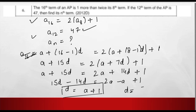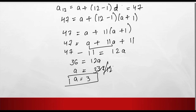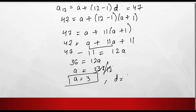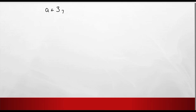Now we have a equals 3. Since d equals a plus 1, substituting the value of a, which is 3: d equals 3 plus 1, which is 4. So we have two values: a equals 3 and d equals 4.